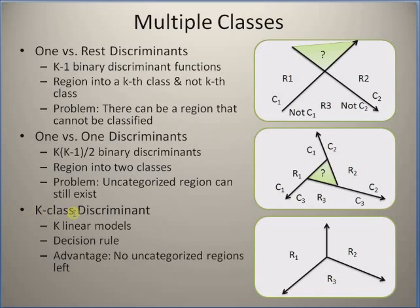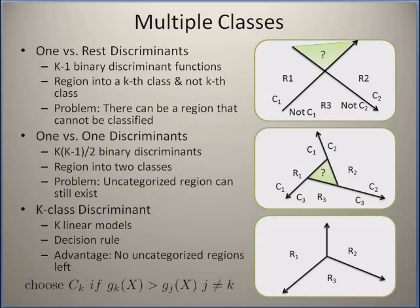The good solution for this problem is to use a k-class discriminant function, which simultaneously decides the exact class of a sample vector among k possibilities. This k-class discriminant function has k linear models that divide the region into k separate classified regions or categories, with no uncategorized or ambiguous region.